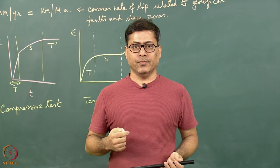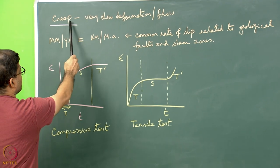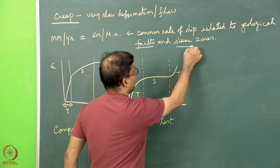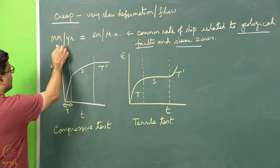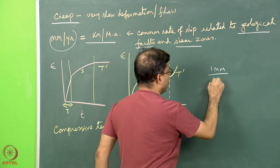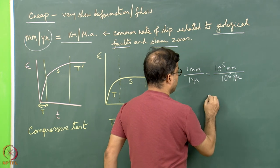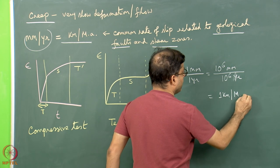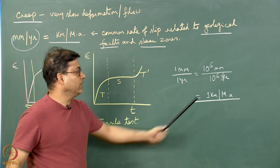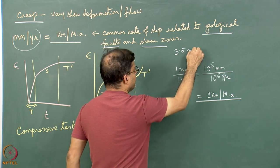In geological cases, creep is important — it indicates very slow deformation or flow of material. In geological faults and shear zones, the slip rate is a few millimeters per year, which is equivalent to 1 kilometer per million year, since 1 mm/year equals 10⁶ mm divided by 10⁶ years. So a fault might move at 3.5 millimeters per year, for example.